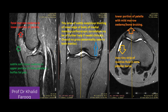Bismillahirrahmanirrahim, Assalamu alaikum warahmatullahi wabarakatuh. Here we have an MR examination of the knee joint — this is the right knee and we have three images. This is a sagittal fat suppression T2-weighted sequence, this is the coronal T2 fat suppression sequence, and this is the axial T2 fat suppression sequence.